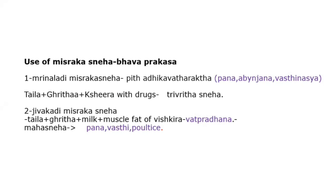Jivagardhi Mishraka Sneha contains Taila, Ghrita, milk plus muscle fatty Vishkira. In Vata Rekta, excessive Sneha — one to three or more types of Sneha should be combined to reduce Vata-pradhana condition, because Vata Rekta is Ruksha in nature. This is Mahasneha.